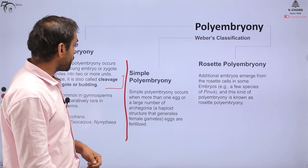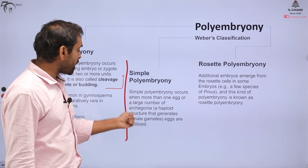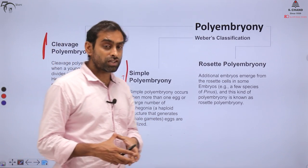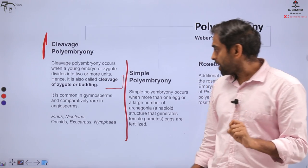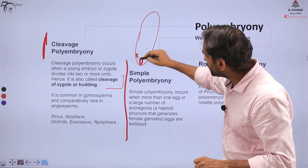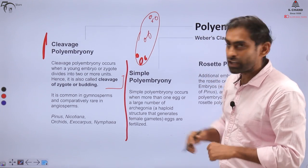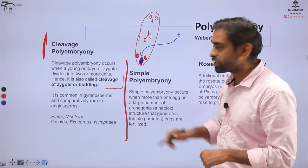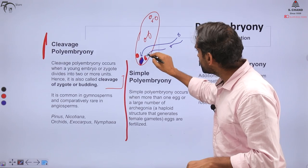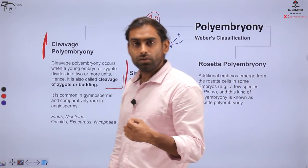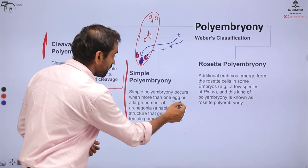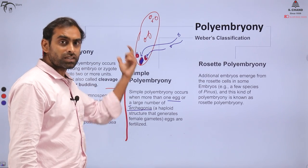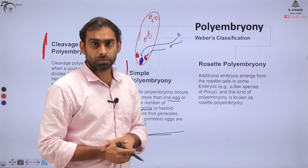The second type is Simple Polyembryony, which occurs when more than one egg or a large number of archegonia — haploid structures that generate female gametes — are fertilized. If more than one egg cell is fertilized: recall that inside the embryo sac there is an egg, synergids, antipodal cells, and a central diploid nucleus. If a pollen nucleus fuses with a synergid cell in addition to the egg, that can also give rise to an additional embryo, leading to polyembryony.